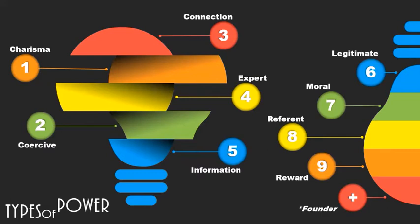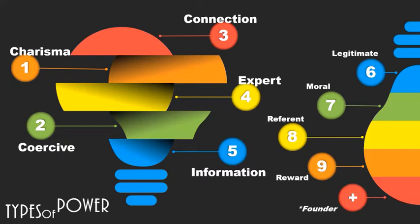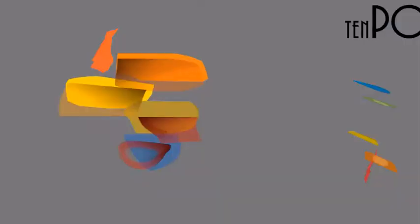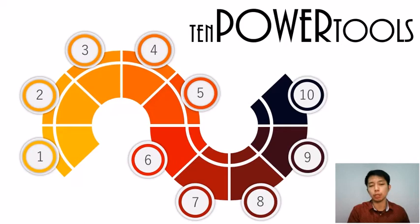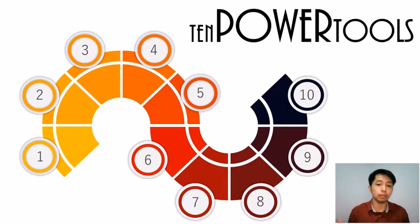Those are the types of power of leadership: Charisma, Coercive, Connection, Expert, Information, Legitimate, Moral, Referent, Reward, and Founder. There might be a little confusion on the difference between leadership power types and tools. Types are preferred characteristics that a leader would like to embody, while tools are just aids or support used by the leader to carry out a particular function. And here are the 10 power tools of leadership.